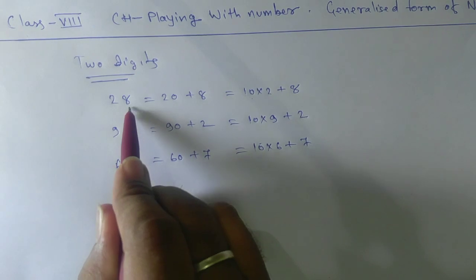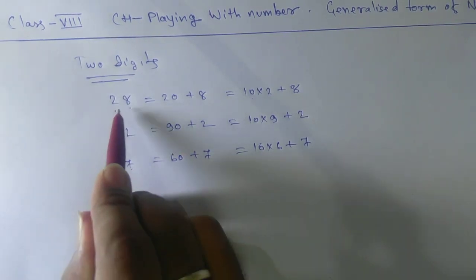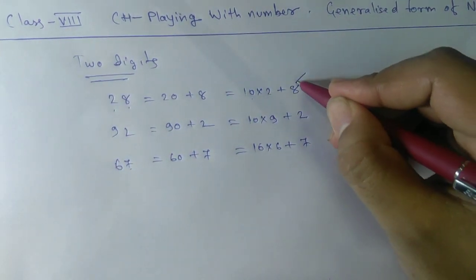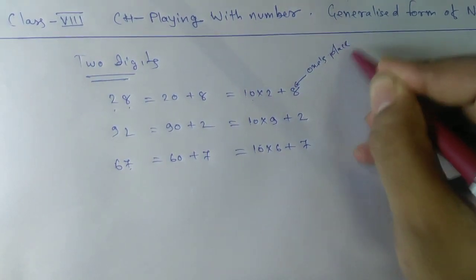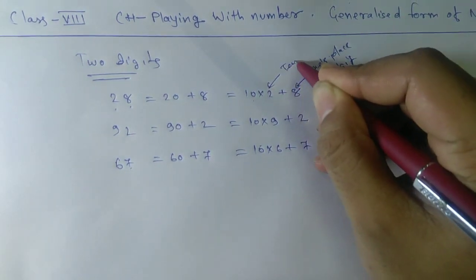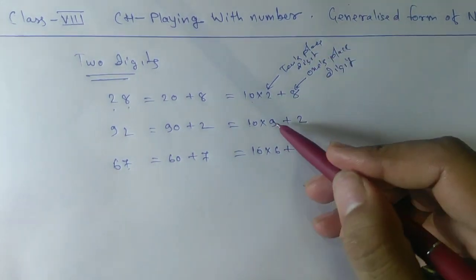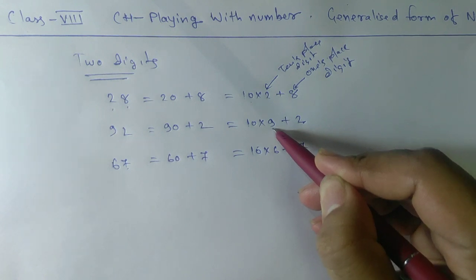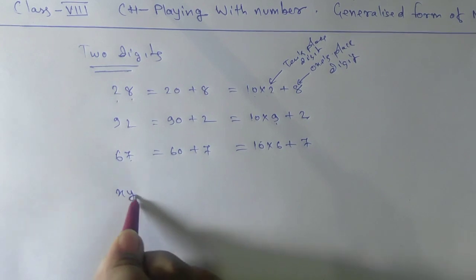Notice that one digit is in the ones place and another is in the tens place. In each case, looking at these numbers, the ones place digit and the tens place digit follow the same pattern. This holds true for every two-digit number.